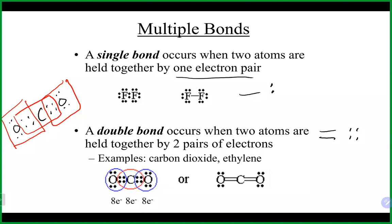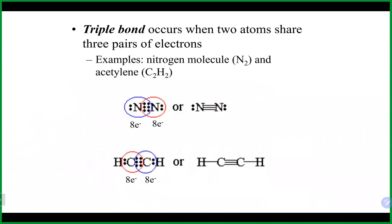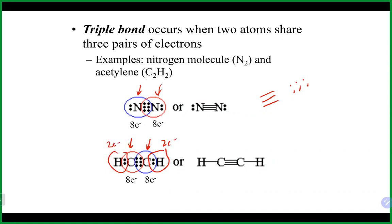Sometimes even a double bond isn't enough to get everybody to eight, and you need a triple bond — three lines representing six electrons, or three pairs. Nitrogen N2 is an example: each nitrogen needs the six shared electrons to reach eight. Another example has carbon needing a triple bond between two carbons to get to eight. And hydrogen still only ever needs two electrons.